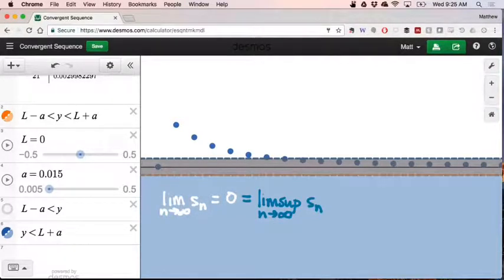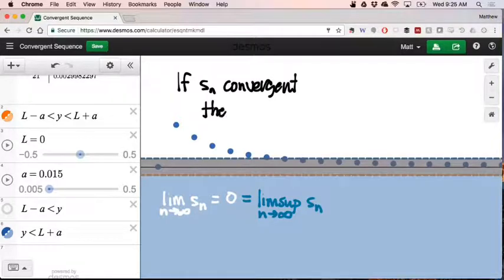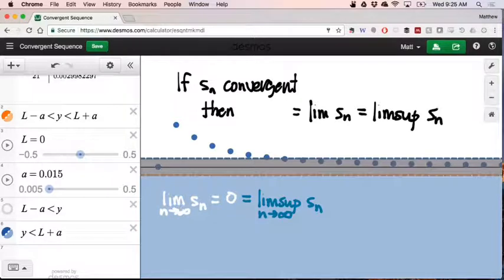it's also true that the limit superior of my sequence is zero. And the theorem that goes along with this is that if Sn is convergent, then the value of the limit agrees with the value of the limit superior. How about the limit inferior? Same deal, exactly. The only difference is that in that case, my half plane goes, it's the upper half plane instead of the lower half plane. So for a convergent sequence, all of these different types of limits tell us the same story. It's only for sequences which don't converge where we can get some interesting behavior.